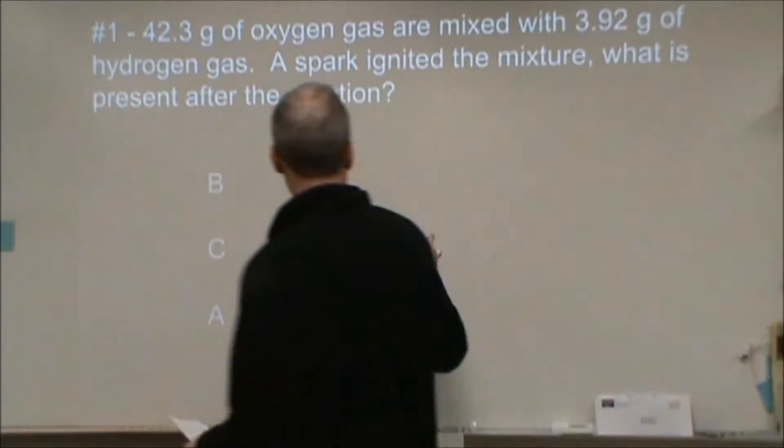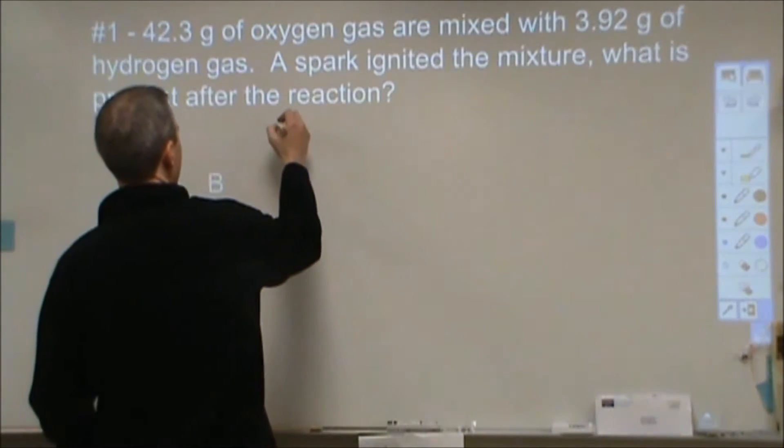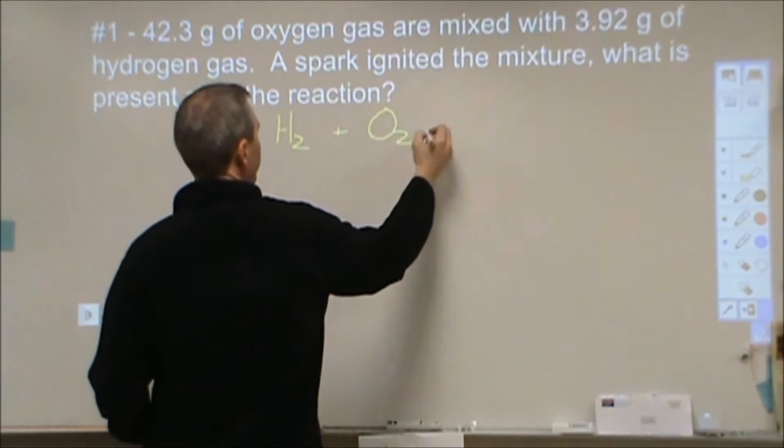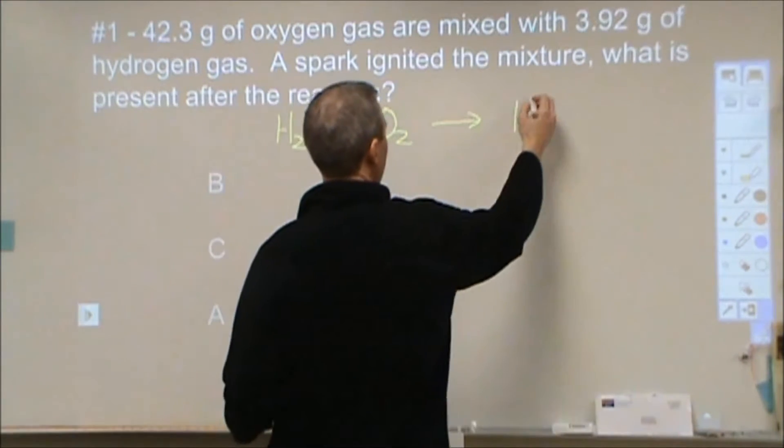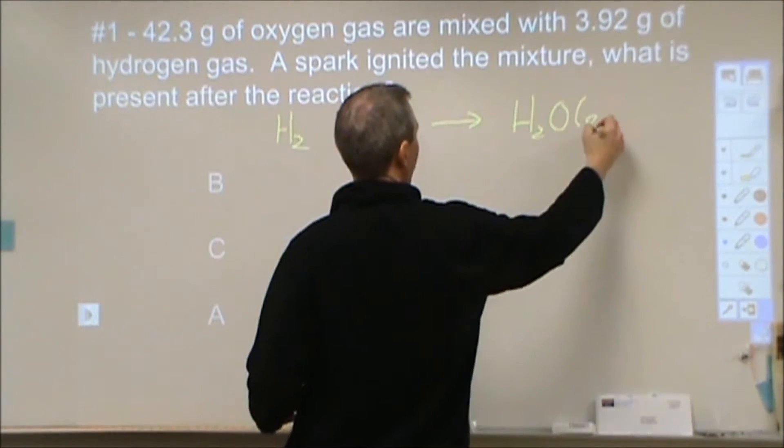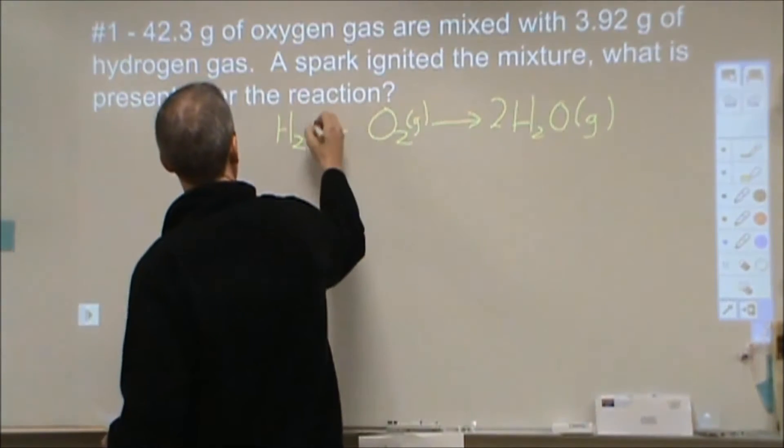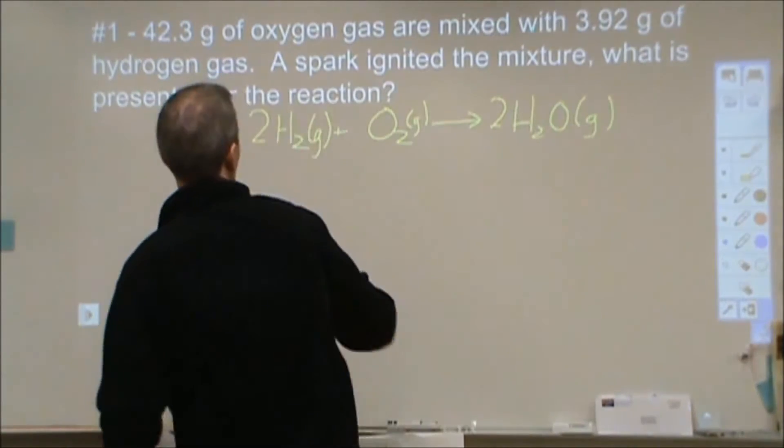First step, just like before, we're going to write out the reaction. Here we're doing oxygen and hydrogen gas. So we have H2, O2, making water, gases for all. Then we're going to have a 2, 1, 2 ratio.